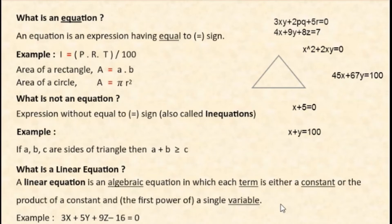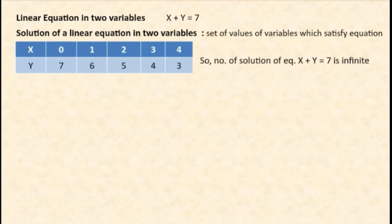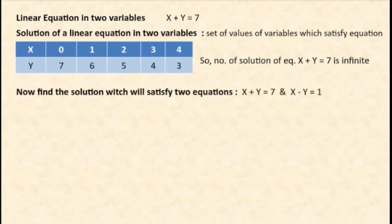For a linear equation in two variables, consider x plus y equal to 7. You cannot give a single answer — solutions are infinite: x is 0 then y is 7; x is 1 then y is 6; x is 2 then y is 5; x is 3 then y is 4. The number of solutions for x plus y equal to 7 is infinite because there are two variables and only one equation.